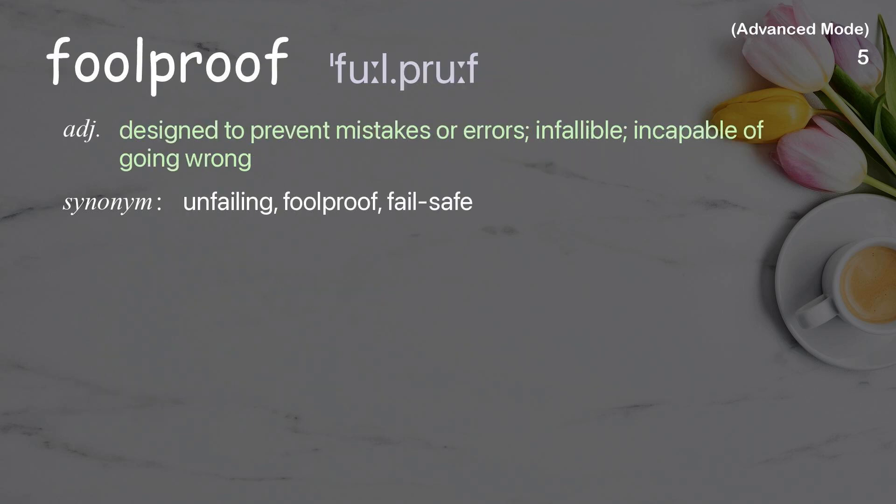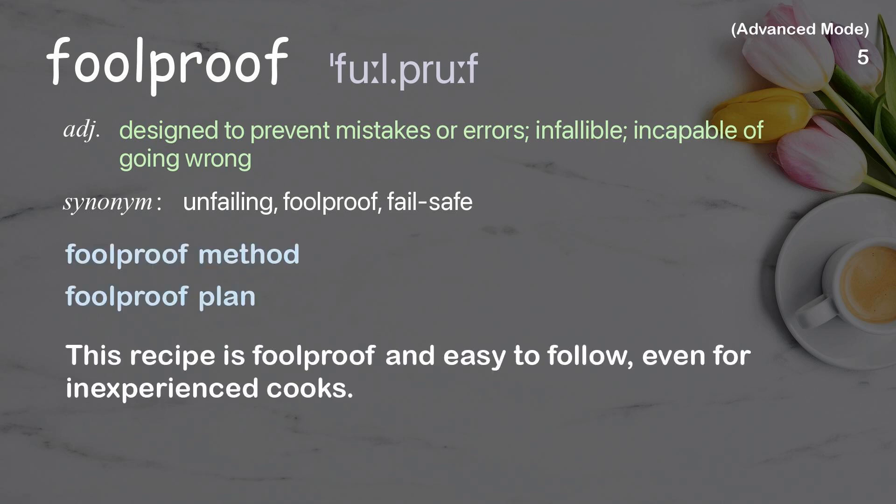Full proof. Designed to prevent mistakes or errors; infallible, incapable of going wrong. Examples: full proof method; full proof plan. This recipe is full proof and easy to follow, even for inexperienced cooks.